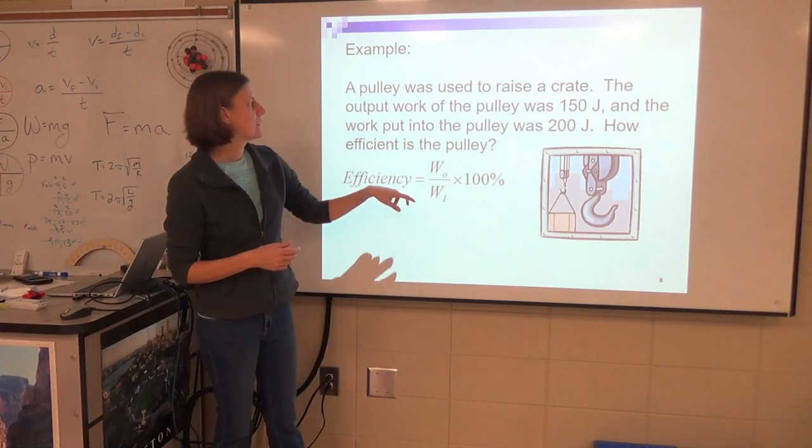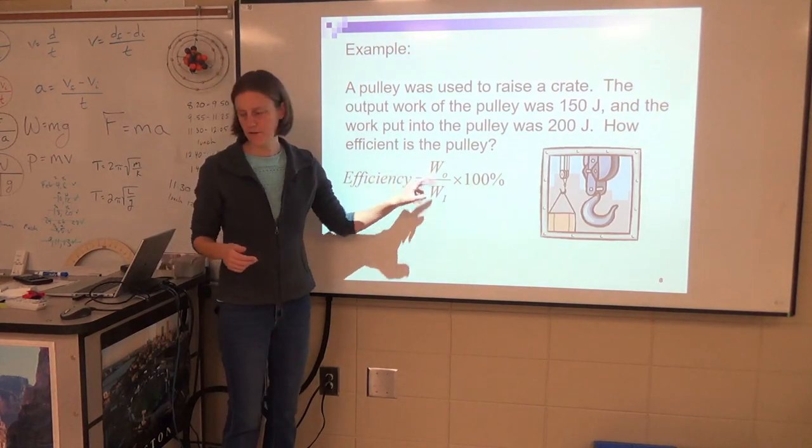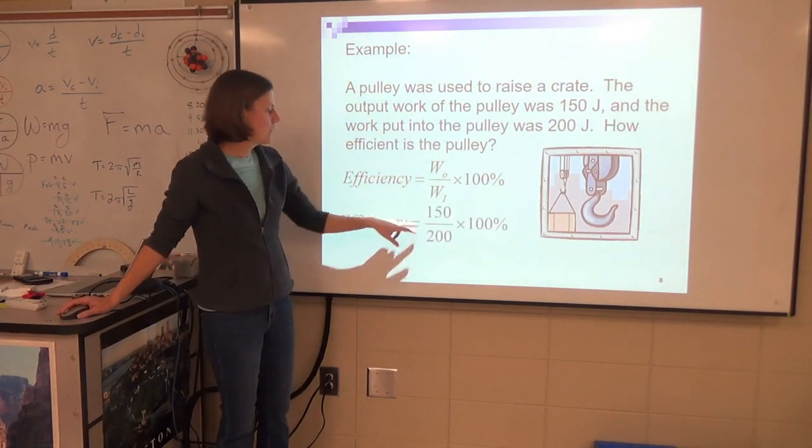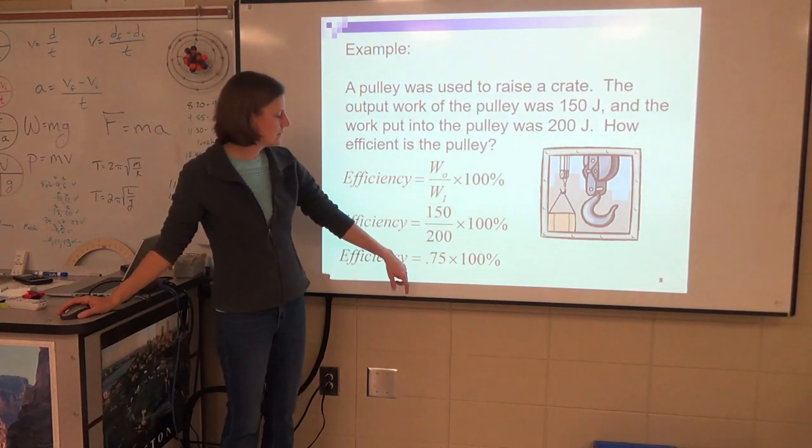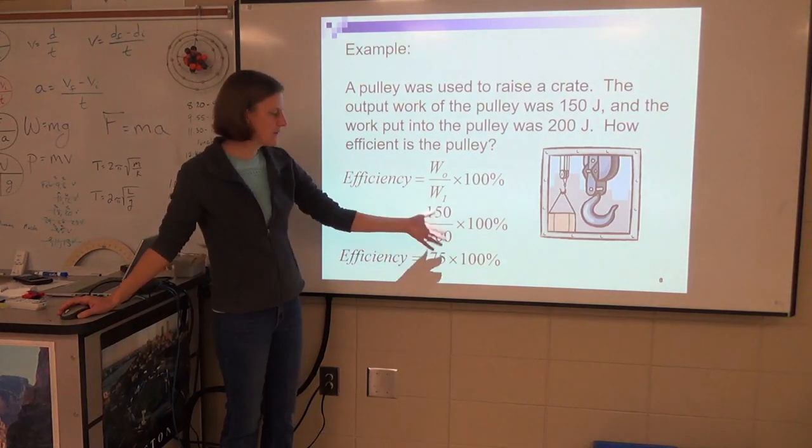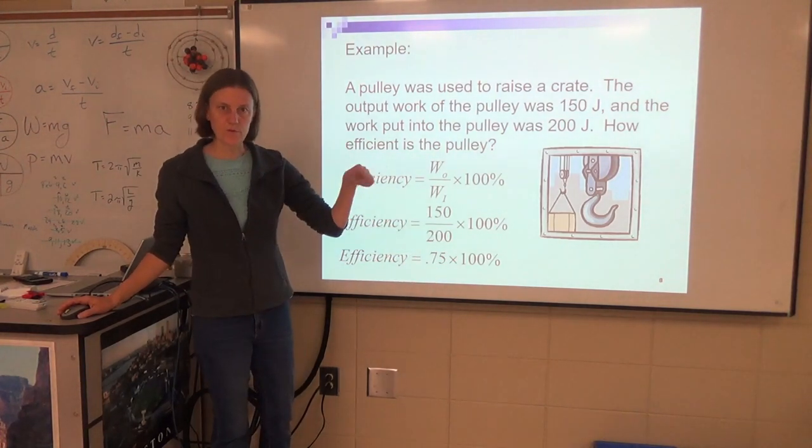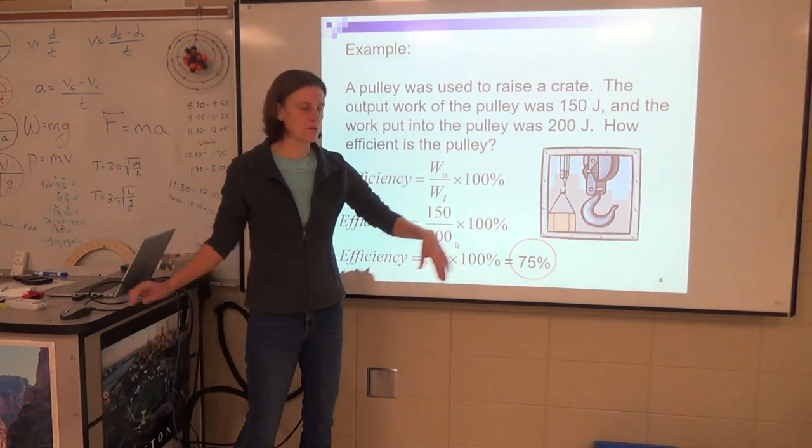So the work output was 150, work in was 200. You just make that fraction: 150 over 200, which is three-fourths, which gives you 0.75. Then just make that a percent—you know to move your decimal. So that would be a 75% efficient machine.